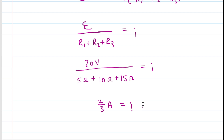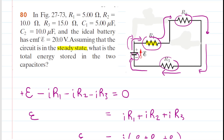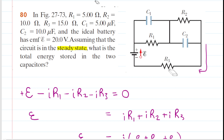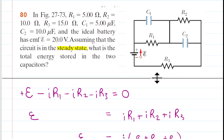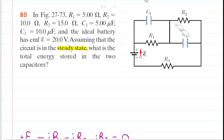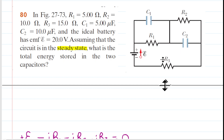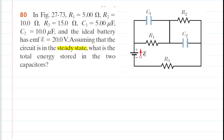Once we have the current, we can solve for what the question is actually asking. Going back to the original circuit, those capacitors are there and fully charged. We need to solve for the energy stored in C1 and the energy stored in C2 when fully charged, then find the total energy by summing them. Energy is a scalar quantity, so we simply add them. The energy stored in a capacitor equals one-half times the capacitance value times the potential across the plates squared.